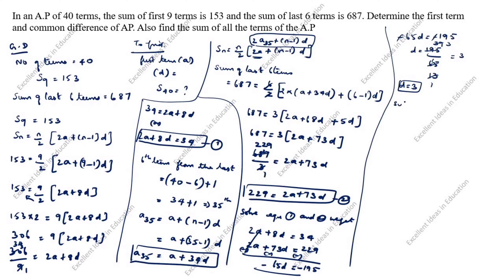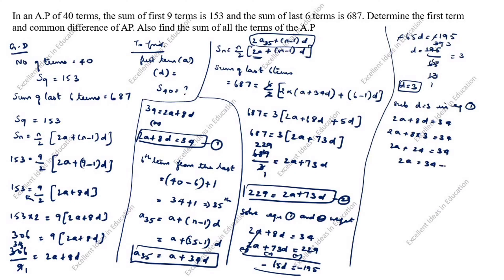Substituting d = 3 into equation 1: 2a + 8d = 34, so 2a + 8 × 3 = 34, giving 2a + 24 = 34, then 2a = 10, so a = 5.